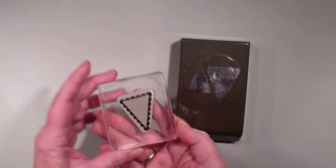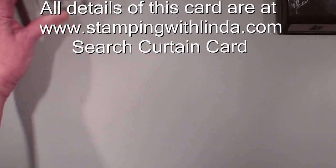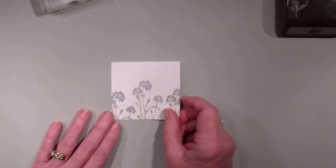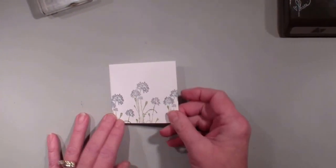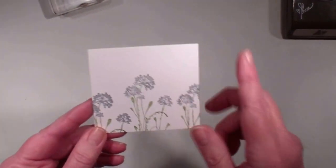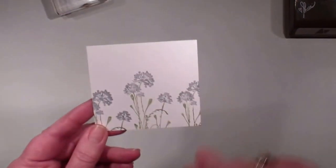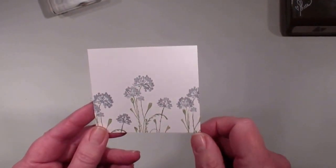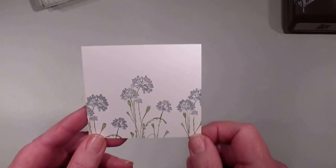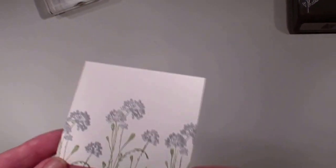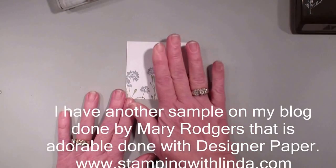So let's get started. I will have all the dimensions on my blog, stampingwithlinda.com. What I have done is taken a piece of three inch by three and a quarter inch whisper white. It is stamped with the serene silhouettes stamp set using my markers.